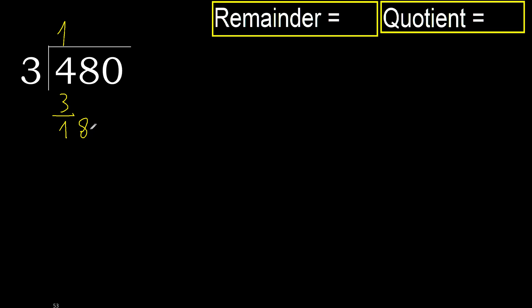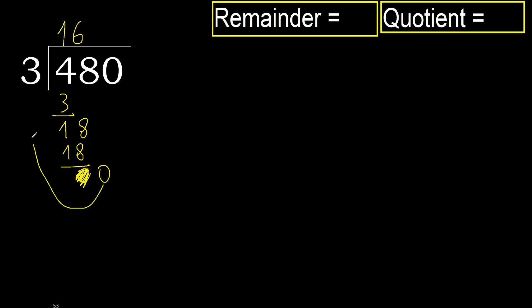Bring down to get 18. 3 multiplied by 7 is greater, 3 multiplied by 6 is not greater, so we use 6. Subtract to get 0. Eliminate the 0 on this side. Since 0 is less and there is no next number, we finish here. Always complete with 0 — complete with 0 because we finish it with this number.